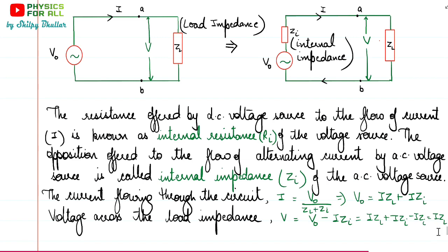If this is an ideal voltage source, internal impedance would be zero. In ideal case — whether DC or AC voltage source — the internal resistance or internal impedance is zero. In that particular case, voltage across load is always the same voltage V0 that is available across the load. When internal resistance or internal impedance of a voltage source is zero, such a voltage source is known as an ideal voltage source, and the same amount of voltage V0 is available across the load. This is all about voltage source — we have discussed DC voltage source and AC voltage source.